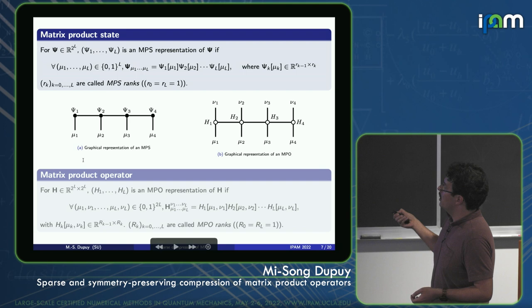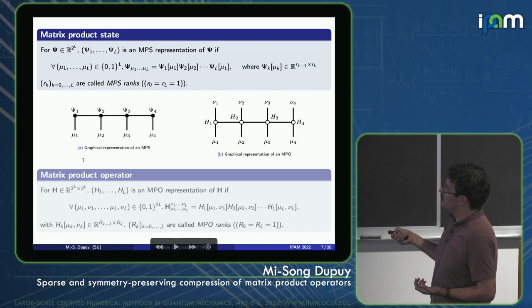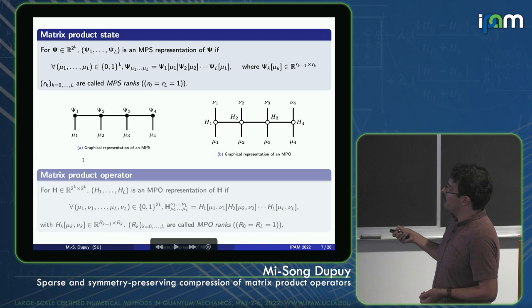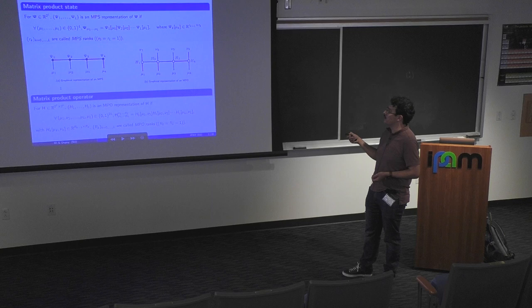Instead of writing formulas, it is easier to use the graphical representation. For L=4, each node represents a tensor (psi_1 to psi_4). Each open leg represents a free index, and each connected leg denotes a summation over the shared index — representing a matrix-vector or matrix-matrix multiplication.